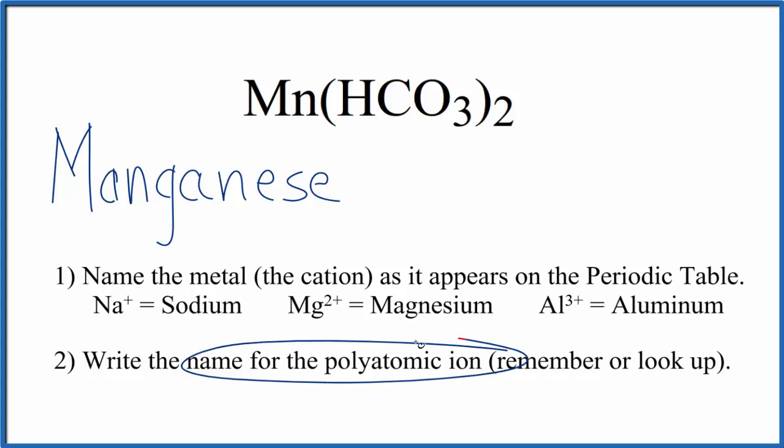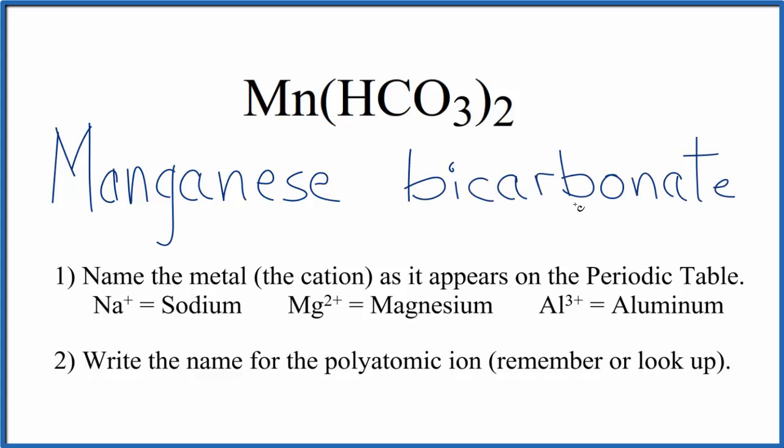Next, we write the name for the polyatomic ion. You either remember that this HCO₃ is the bicarbonate ion, or if you're allowed, you look it up on a table of polyatomic ions. So I'm going to write bicarbonate, lowercase b, and again, sometimes we call this the hydrogen carbonate ion.